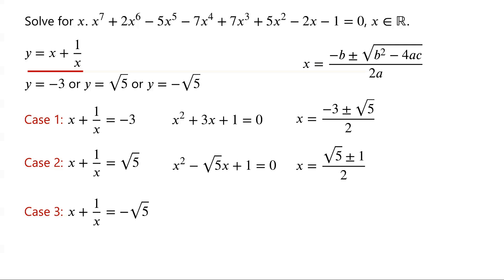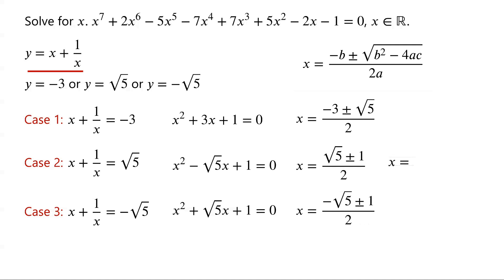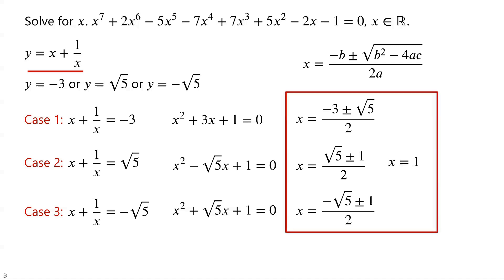For case 3, multiply the equation by x and rearrange: x squared plus root 5 times x plus 1 equals 0. The coefficients are a equals 1, b equals root 5, and c equals 1. So x equals (negative root 5 plus or minus 1) over 2. Including the root x equals 1, the equation has a total of 7 real roots.